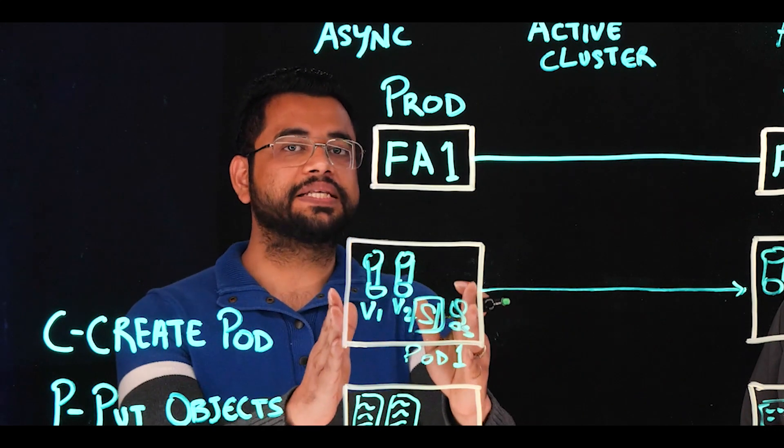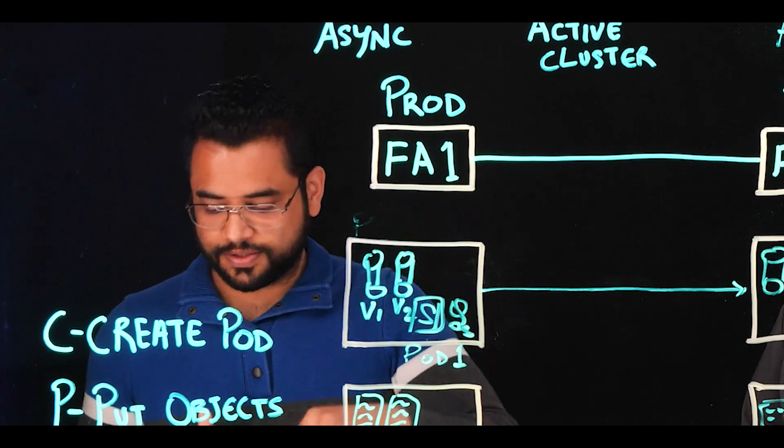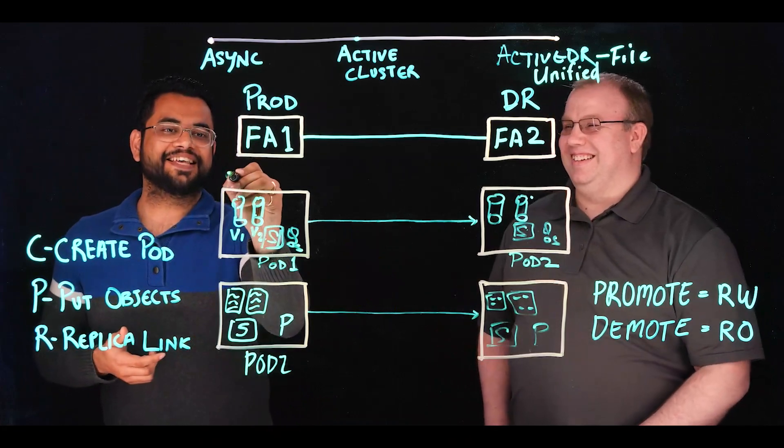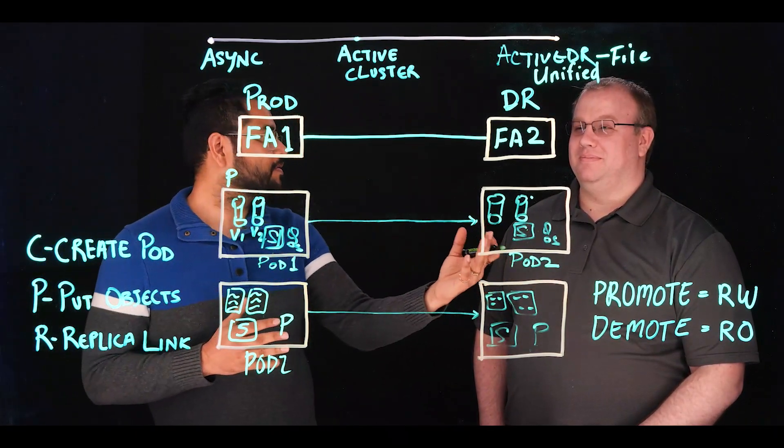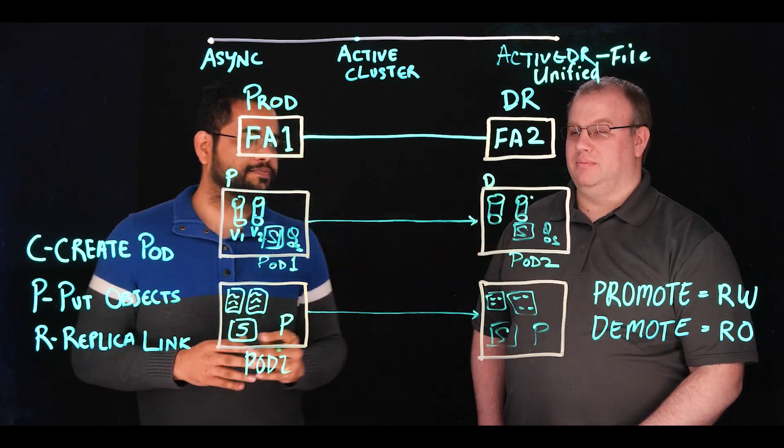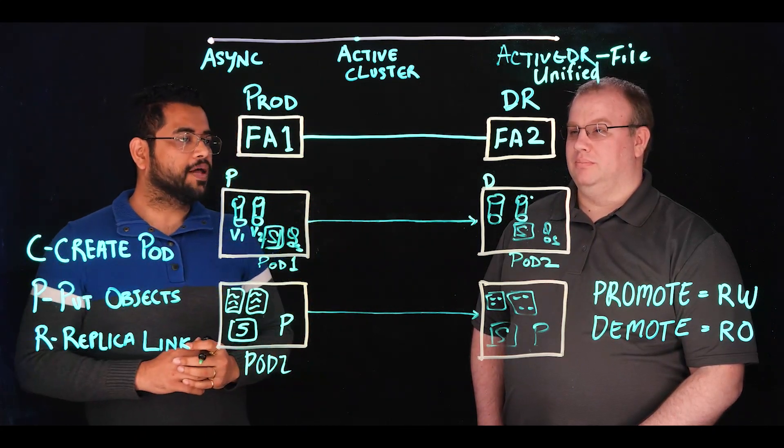So to implement a DR scenario and to get ready for that, we have to talk a little bit about the statuses of the pod, which are promote and demote. So when a pod is in read-write access, it's in a promoted state. And when a pod is accepting reads only, it's in a demoted state. And the flow is happening of changes from prod to DR.